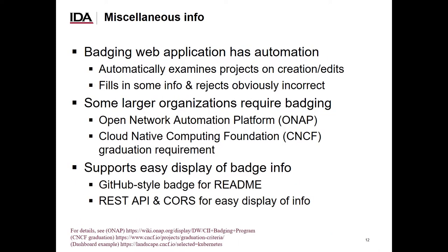Here is some miscellaneous information. The badging web application automates some steps. When you create a project entry, we try to automatically fill in information, and when a project entry is edited, we reject information that's obviously incorrect. That makes the badging process simpler and more accurate. Some larger organizations already require badges in some cases, including the Open Network Automation Platform and the Cloud Native Computing Foundation. The badge application makes it easy to display badge information — for example, projects on GitHub can easily modify their README to display their current badge status. We have a REST API and support cross-origin resource sharing (CORS), making it easy to get display information for specialized needs such as dashboards.